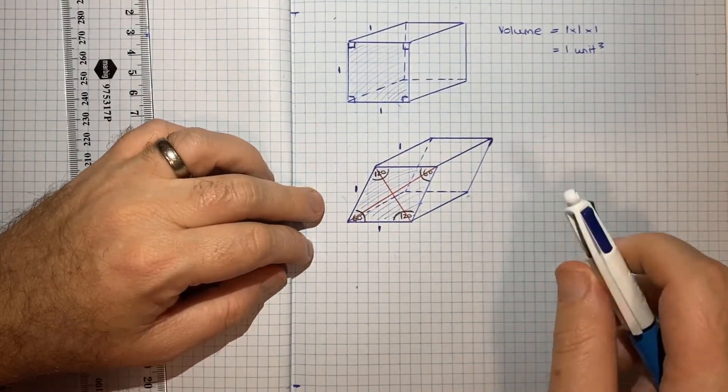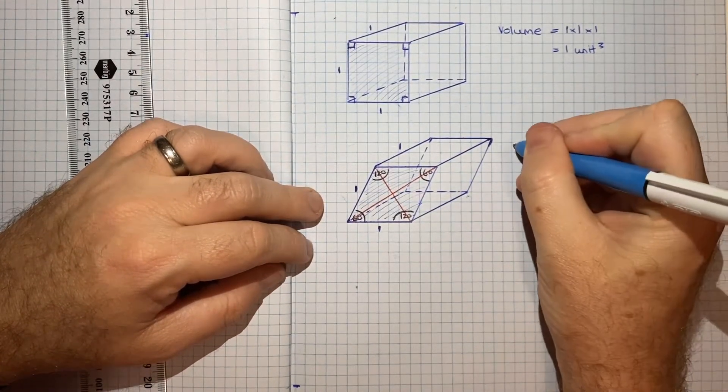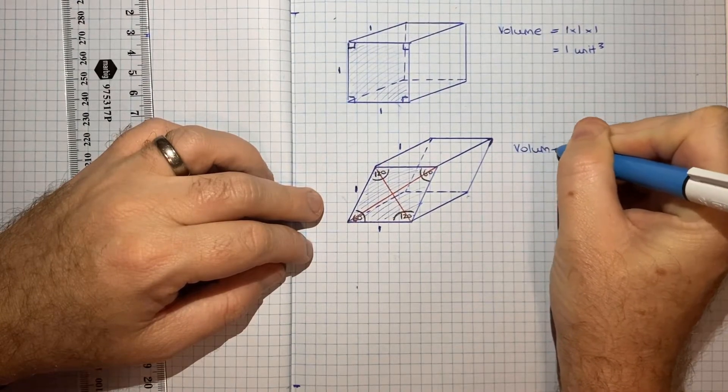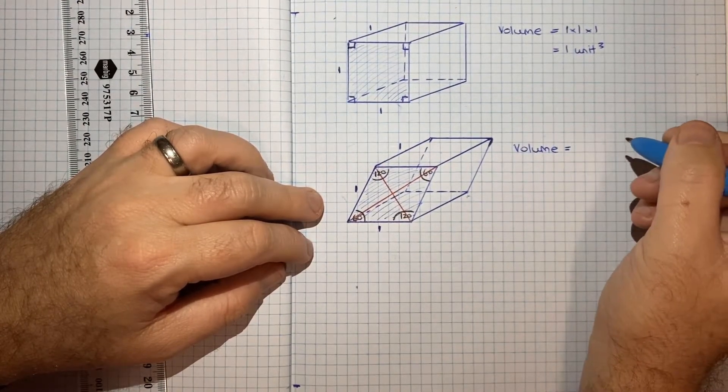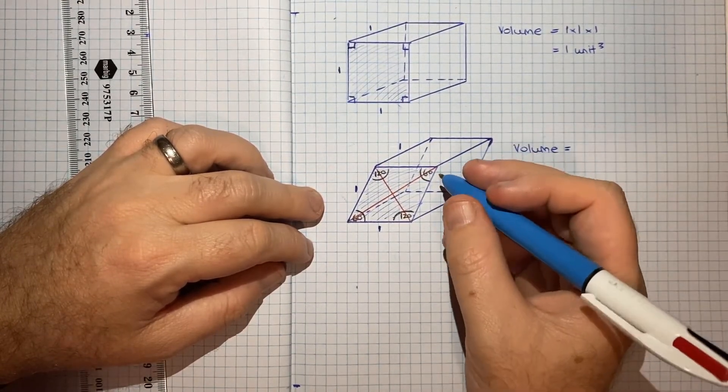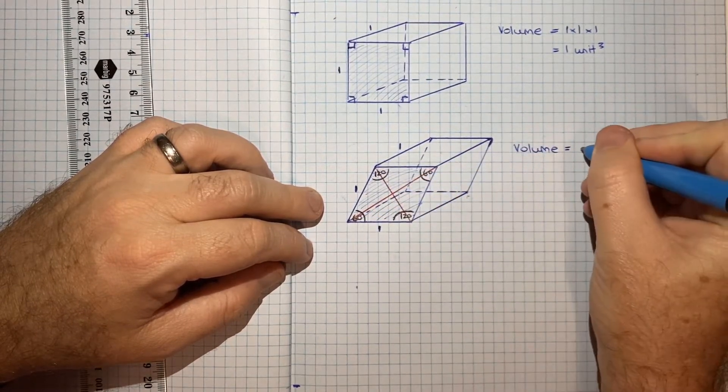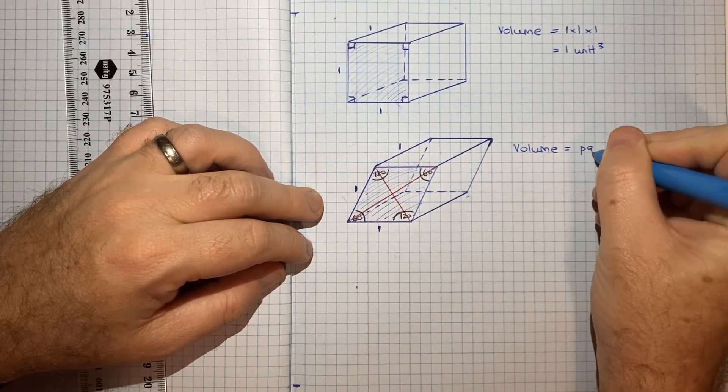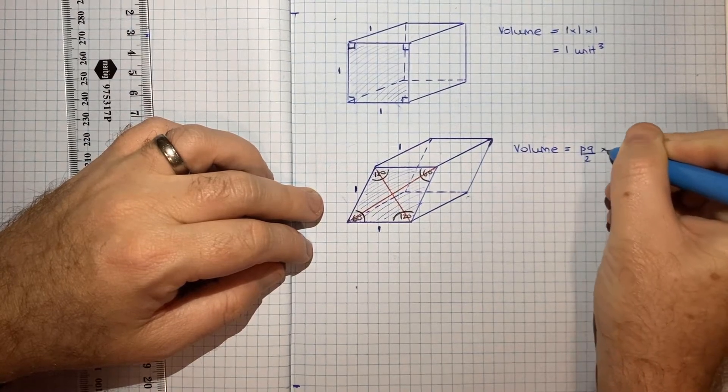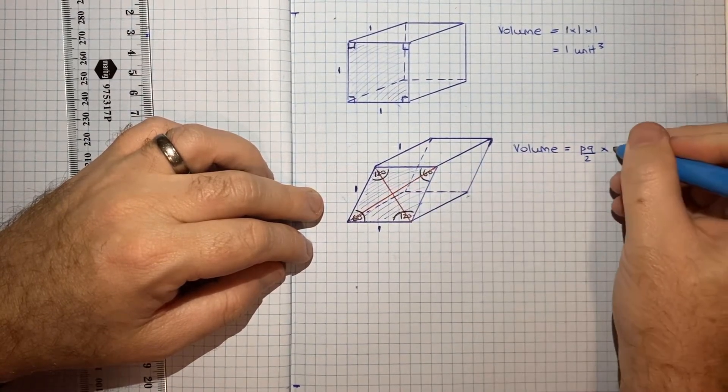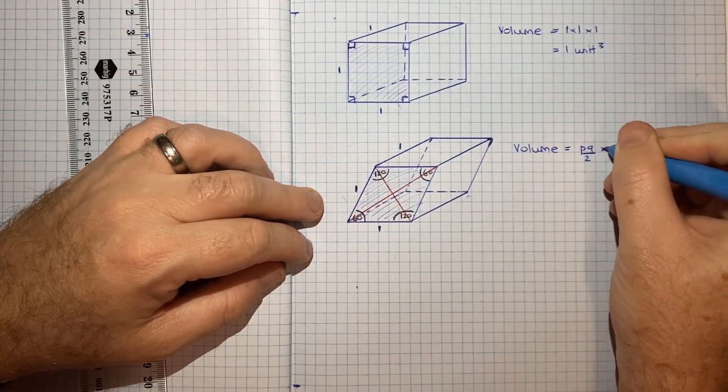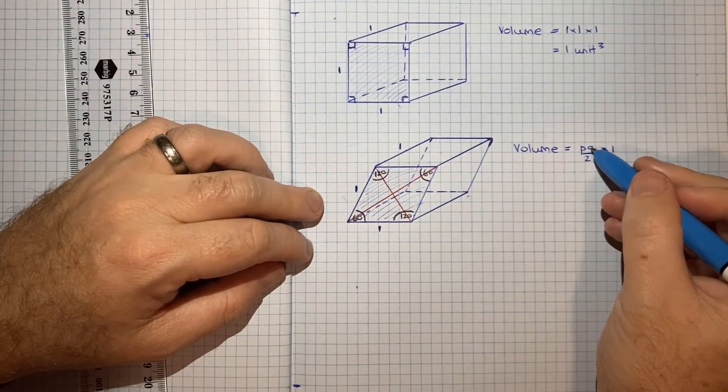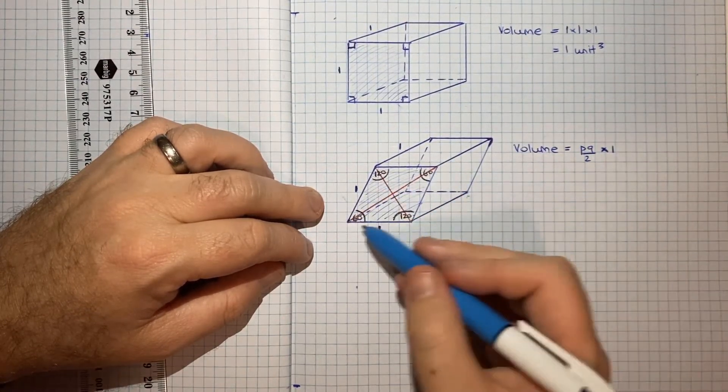So that's how we'll do it. So here we're going to have volume is equal to, if I call these diagonals P and Q, we'd get P times Q over 2 multiplied by the height, which is still just 1. And so the question is, what is P and what is Q, given these dimensions and these angles?